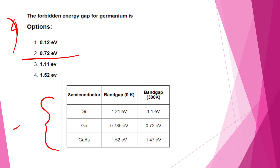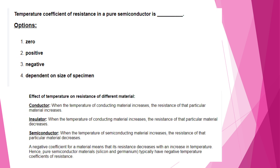Now let's look at the 5th question. The temperature coefficient of resistance in a pure semiconductor is — is it zero, positive, negative, or dependent on the size? This is Option C, which is negative. In a pure semiconductor, the temperature coefficient of resistance is negative.